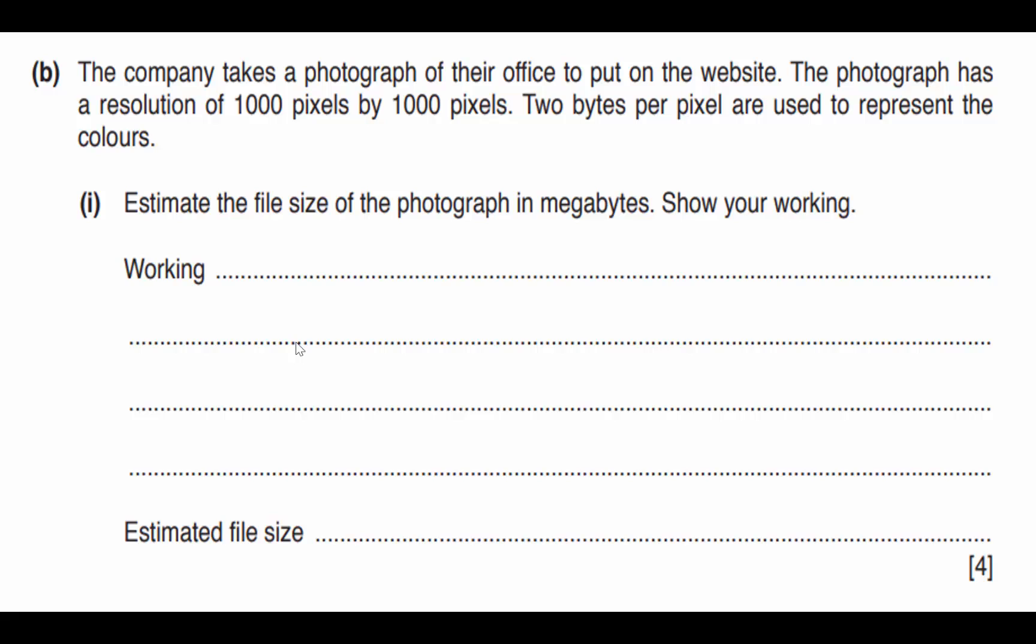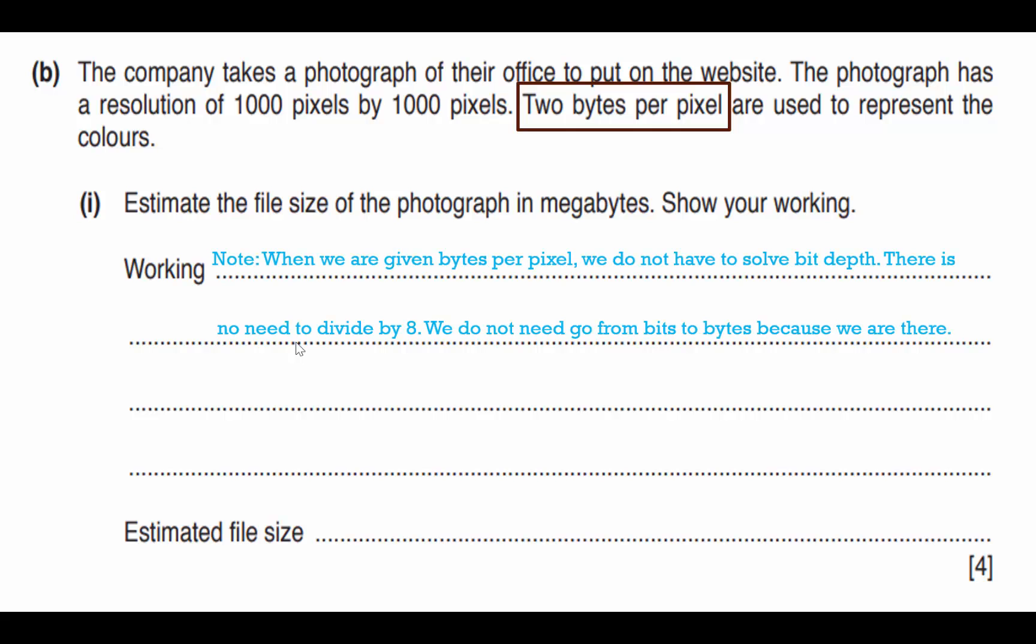The company takes a photograph of their office to put on the website. That's fine. The photograph has a resolution. Ah, important information here of 1000 pixels by 1000 pixels. Perfect. We're going to multiply those together. Two bytes per pixel are used to represent the colors, two bytes per pixel. Now here, they've already given us the bit depth as bytes. So we don't have to calculate the bit depth here. When we are given bytes per pixel, we do not have to solve bit depth. There's no need to divide by eight to get the bytes because we're already at bytes. This makes it 10 times easier.